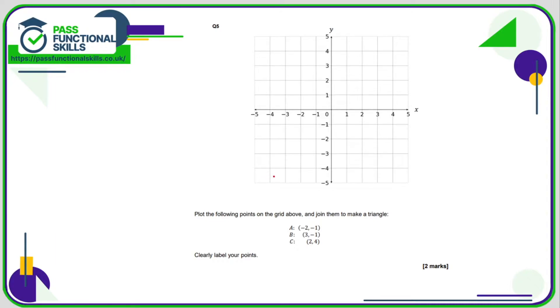Question number five. We are just plotting the points and then just joining them up to make a triangle. So A is negative two, negative one: go across to negative two and down to negative one, that's point A. B is three, negative one: go across to three and down to negative one. And C is two, four: go across to two and up to four, there's C. So all we need to do now is just draw a straight line to join these to make a triangle.